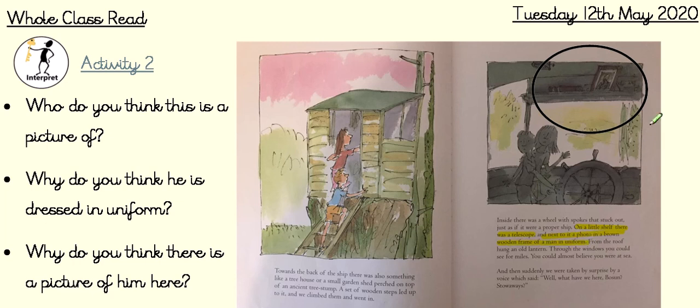I would like you to do a bit of thinking now and answer these questions for activity two in full sentences. The first question is: who do you think this is a picture of? Answer it in a full sentence — 'I think this picture is...' Bear in mind that the text says there's a photo in a brown wooden frame of a man in uniform. What type of uniform do you think it is, bearing in mind where they are pretending to be?